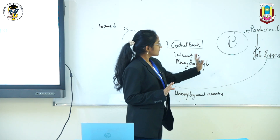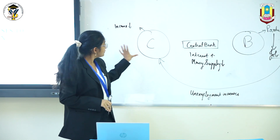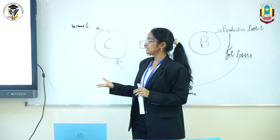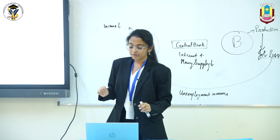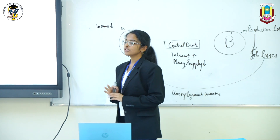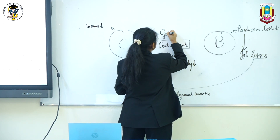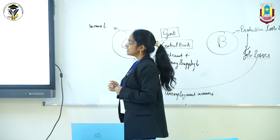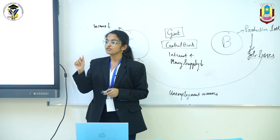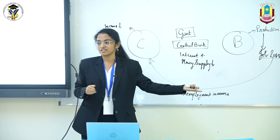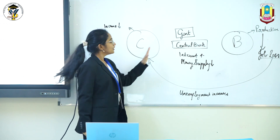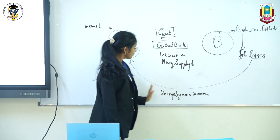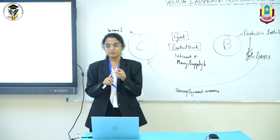Now we can understand how dangerous deflation can be, so there are different policies which can be taken to control the situation. There are two types of policies. The ones we are mainly going to talk about are the fiscal policies, which relate to the government budget. One is increasing government expenditure — for example, construction of roads gives income to construction workers, so consumers can spend more and businesses make profits, meaning they don't have to lay off workers. So deflation can get corrected this way.